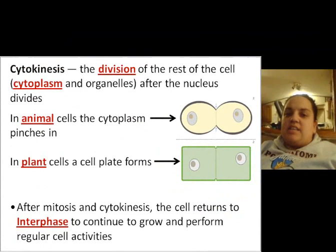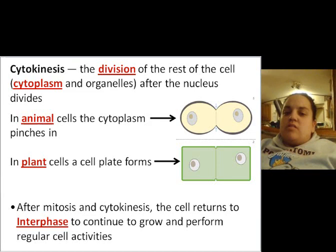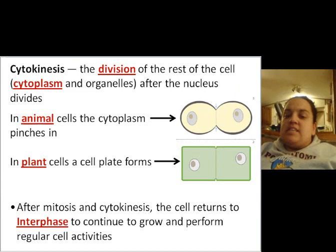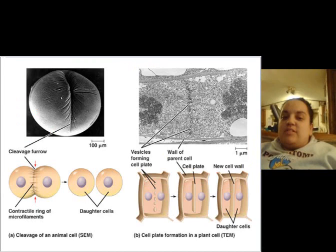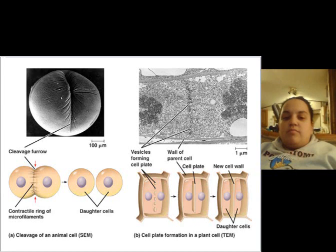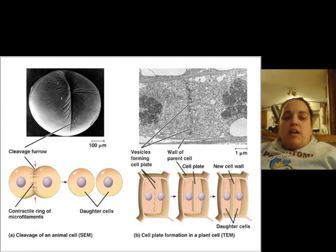This is the fifth one — cytokinesis. This is the division of the rest of the cell: the cytoplasm and organelles, after the nucleus divides. In animal cells, the cytoplasm pinches in. After mitosis and cytokinesis, the cell returns to interphase. The fifth one should look like cytokinesis — the cells are pinching off, the cytoplasm is pinching in, and they're going to separate into two new daughter cells.